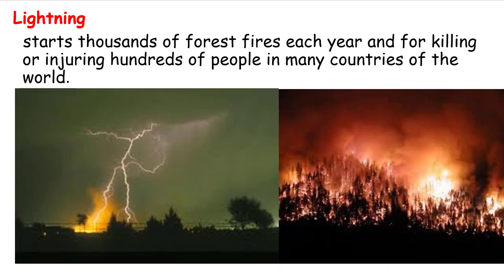The effects of lightning are mostly disadvantages. Lightning starts thousands of forest fires each year and is responsible for killing or injuring hundreds of people in many countries. It also kills living things - plants and animals. Forests are ecosystems with living things, so during a forest fire those living things are going to die.